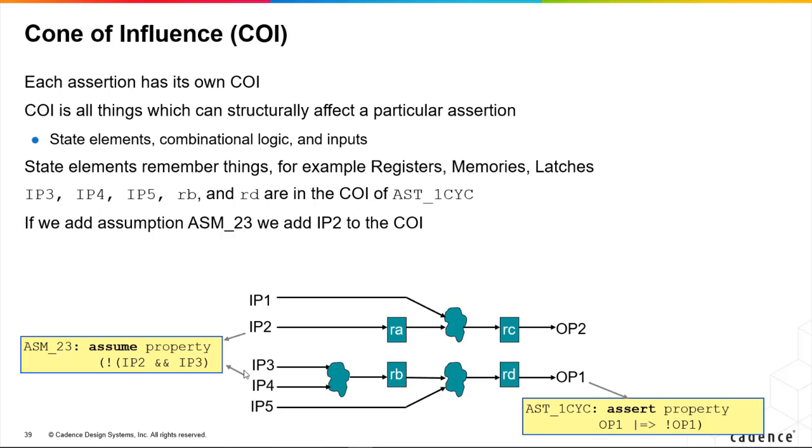So now when driving IP3, the tool has to consider what IP2 is doing as well, so this assumption is not violated. We've effectively drawn IP2 into the fanning cone now.